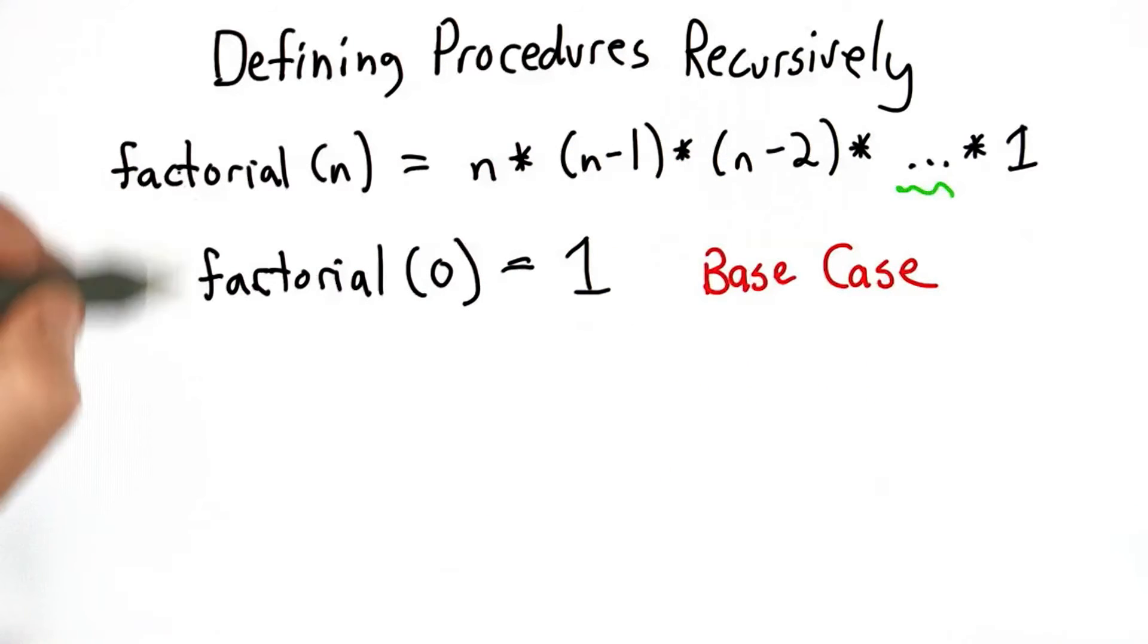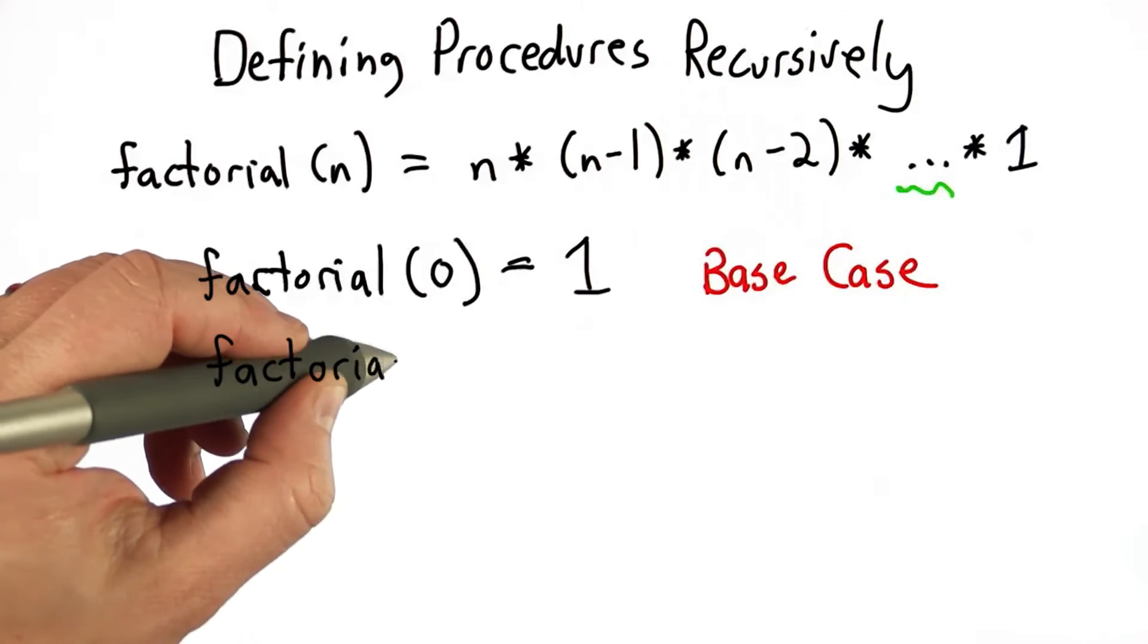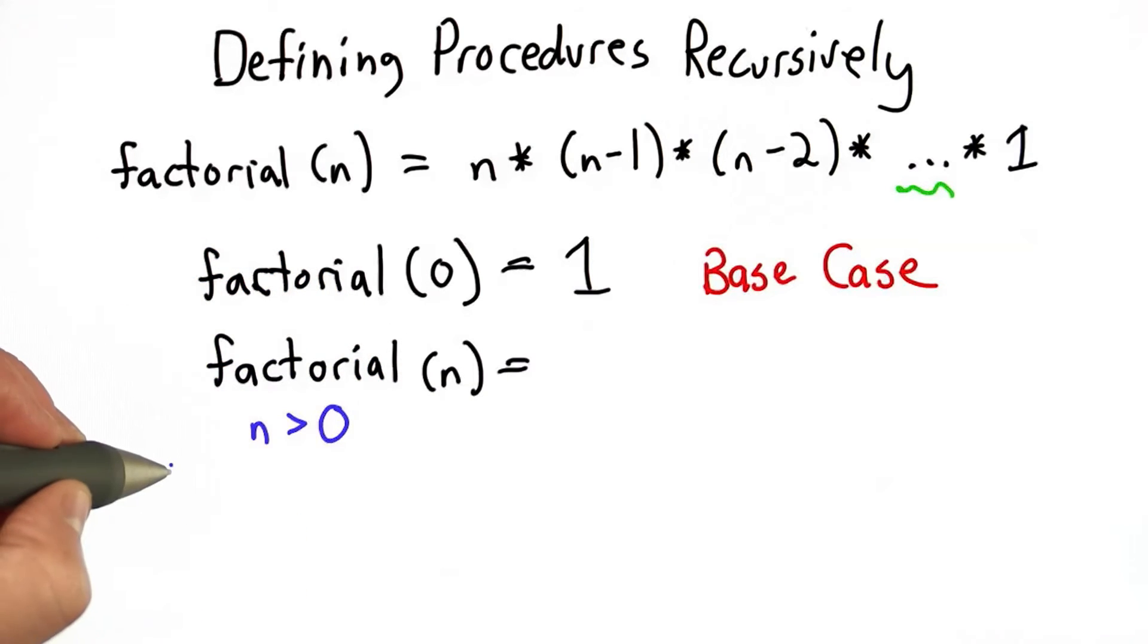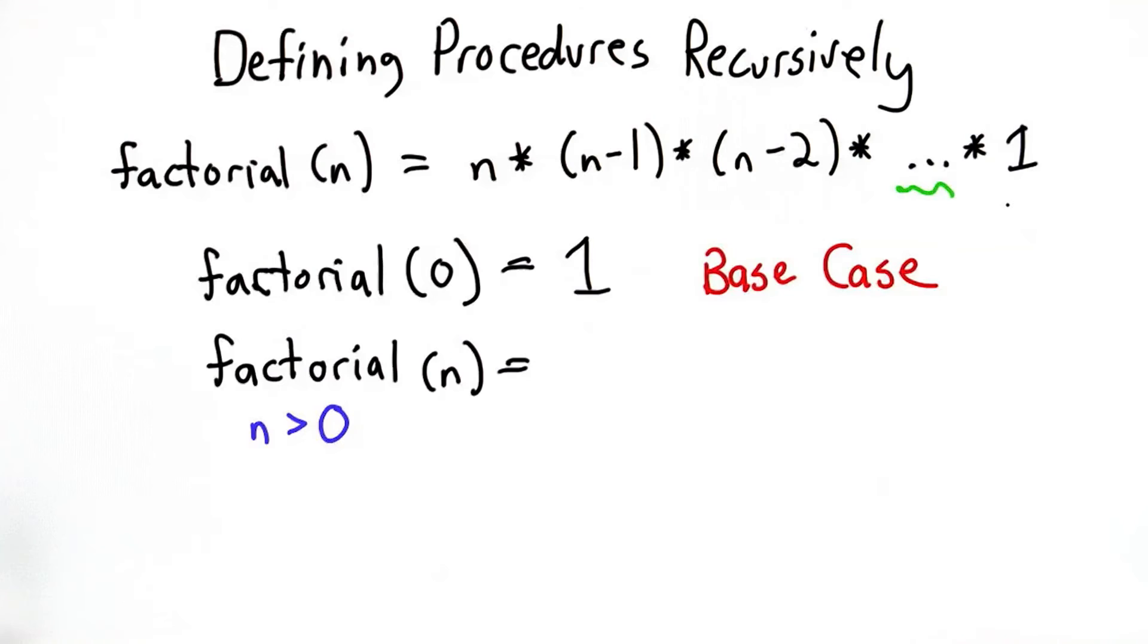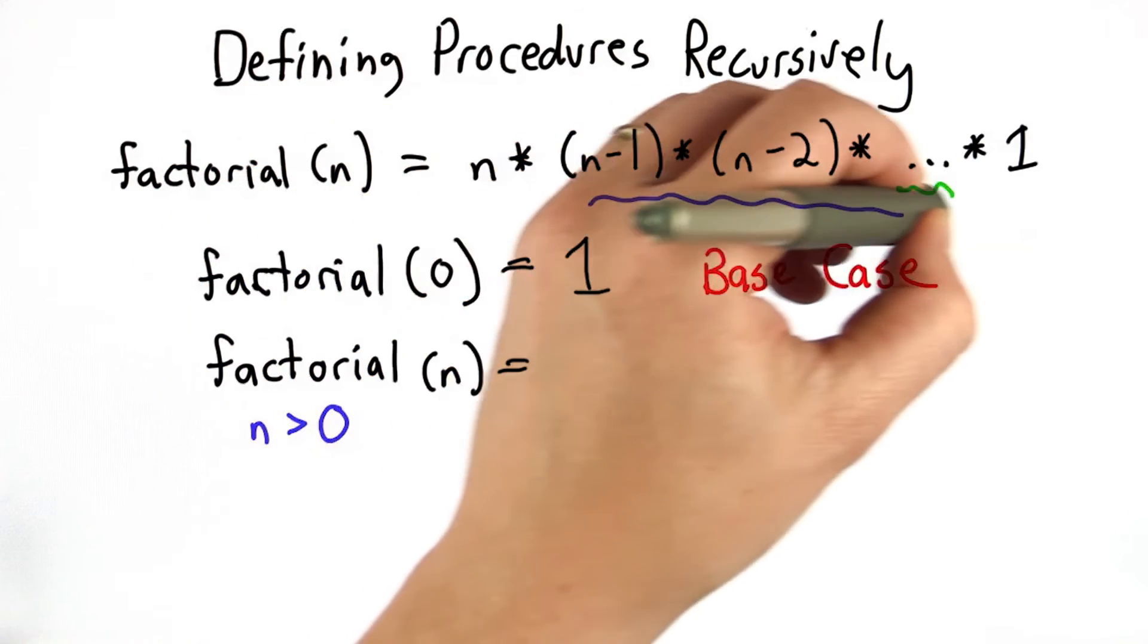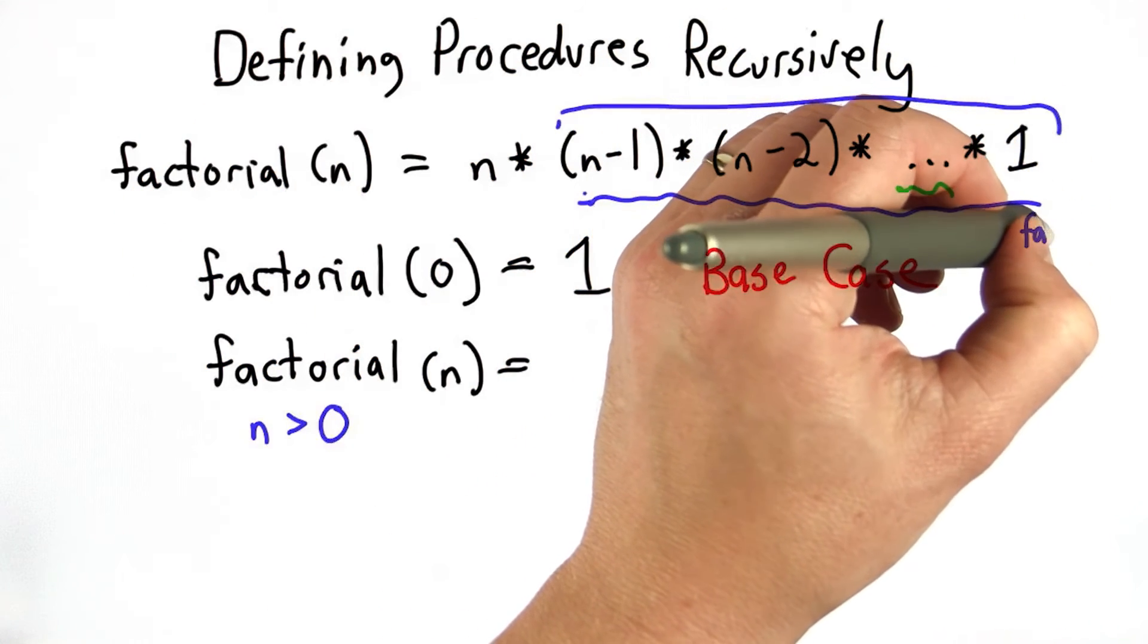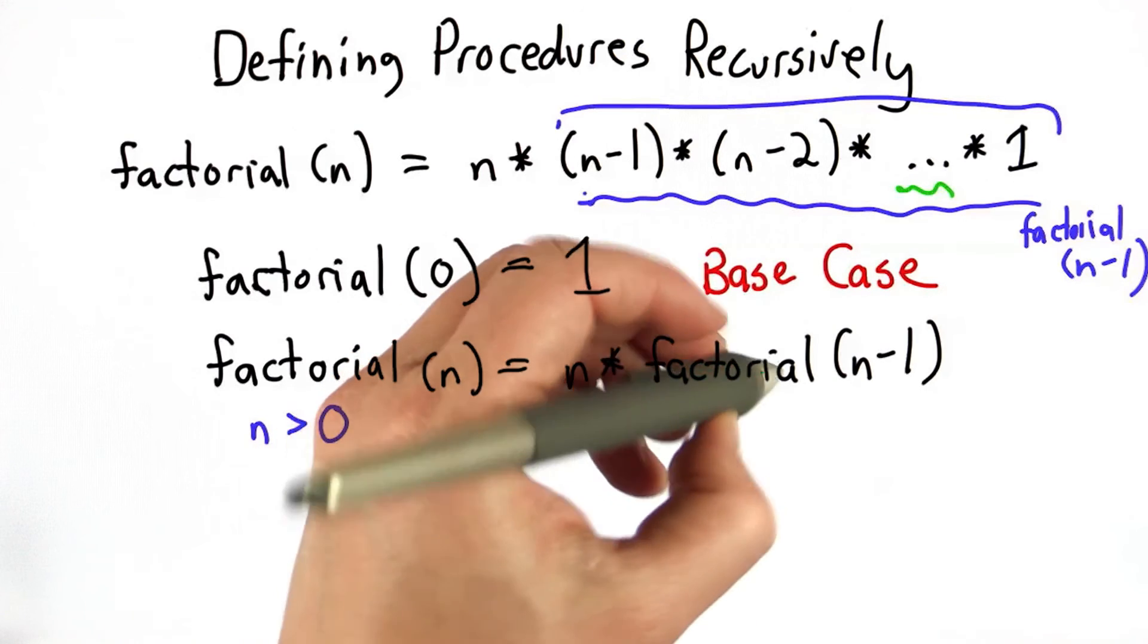Now all we need to do is define the recursive case, where we want to define what the meaning of factorial for any number n is, where n is any integer greater than 0. And we can define that in terms of the factorial of the smaller numbers. So if you look at this definition with the dot, dot, dot, we see that the factorial of n is n times n minus 1, and so forth. Well, this what we have here is actually the factorial of n minus 1. So that means that we can define the factorial of n as n times the factorial of n minus 1. And that's our recursive case.